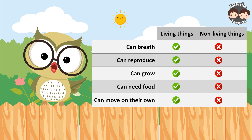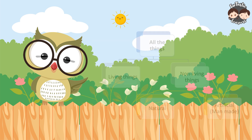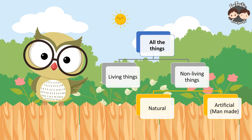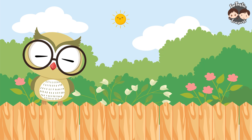So, to sum it up, living things grow, reproduce, and respond to their environment, while non-living things do not. All living things are natural, but not all natural things are living things. Non-living things can be divided into natural and artificial things. I hope you now understand the difference between living and non-living things.